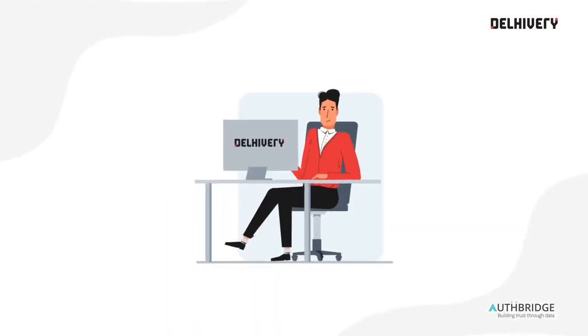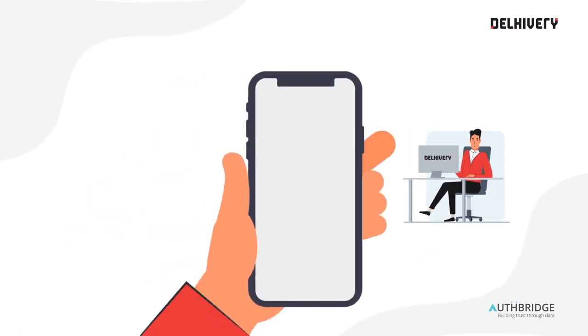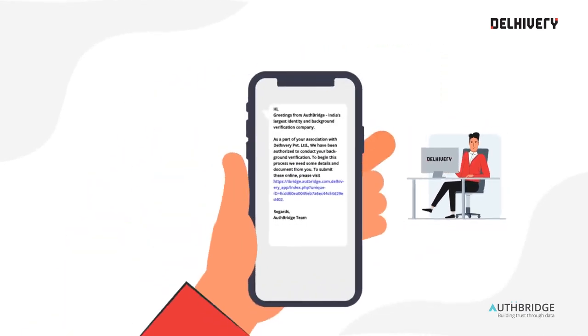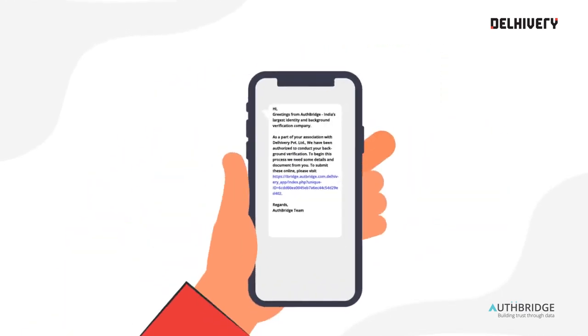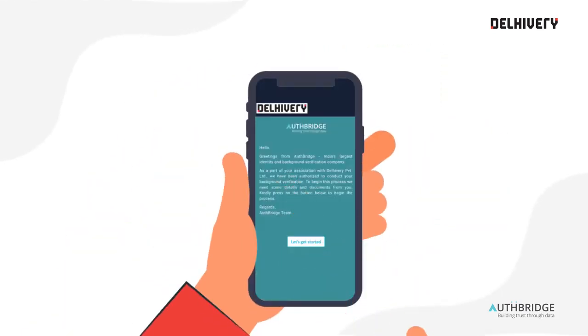Firstly, an agent verification request is initiated in your name. Then a link is sent to your registered mobile number via SMS. Click on the link given in the SMS. You will be taken to an agent verification portal.